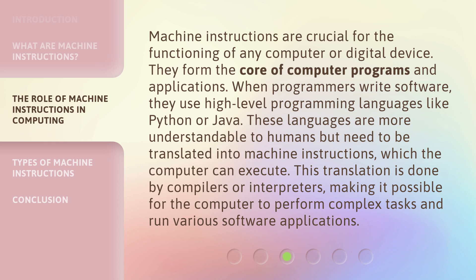Machine instructions are crucial for the functioning of any computer or digital device. They form the core of computer programs and applications. When programmers write software, they use high-level programming languages like Python or Java. These languages are more understandable to humans, but need to be translated into machine instructions, which the computer can execute. This translation is done by compilers or interpreters, making it possible for the computer to perform complex tasks and run various software applications.